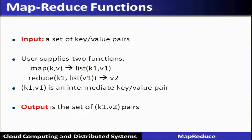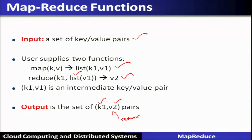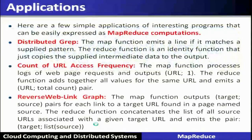In general, input is a set of key-value pairs. The user specifies a Map function which emits a list of intermediate key-value pairs, which become the input to the Reduce function generating output — the keys and final values. The applications of this MapReduce paradigm are many.